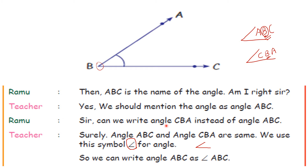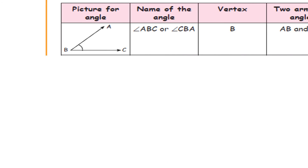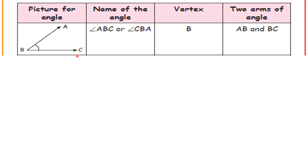We can write angle ABC as the angle symbol followed by ABC. The name of the angle is ABC or angle CBA. The vertex is B, and the two arms of the angle are AB and BC.